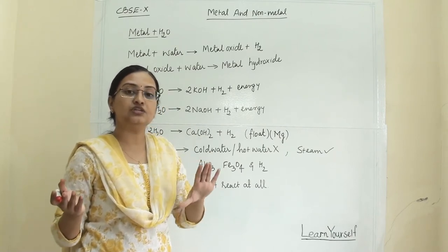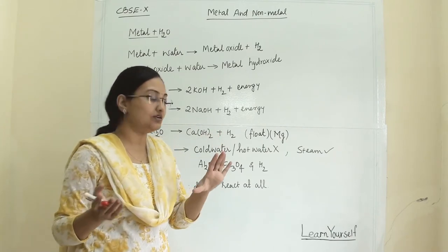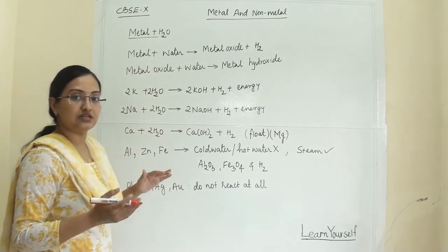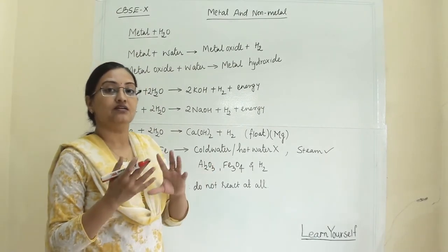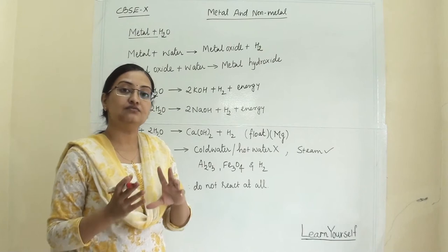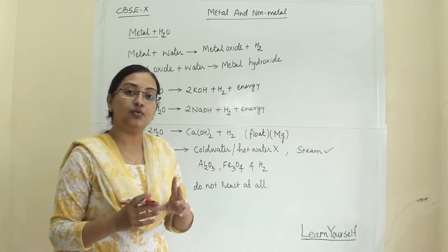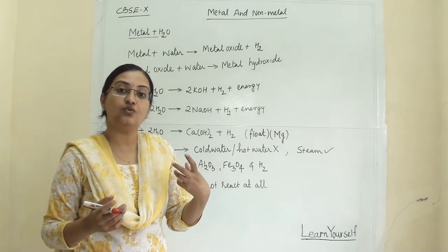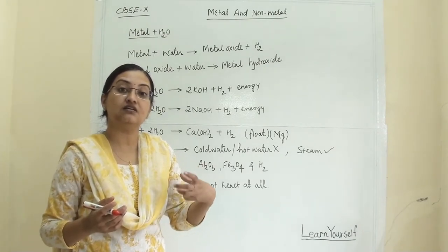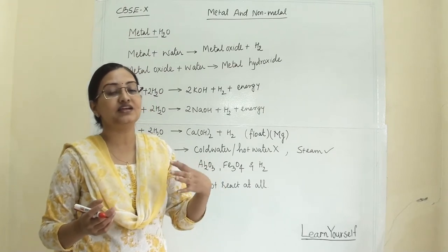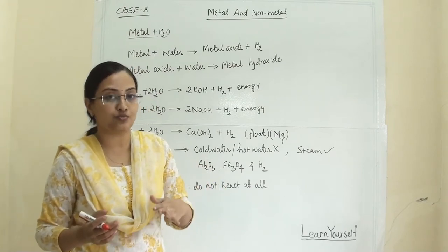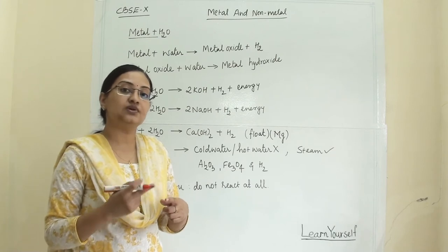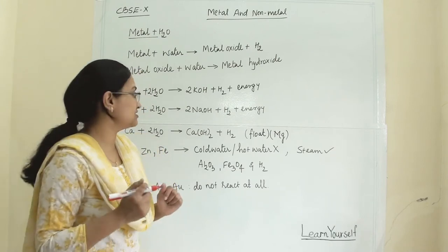In between, metals like magnesium, aluminium, and zinc have reactivity that depends upon how vigorously they react and how vigorously the other reactants react with those metals. So their behaviour will differ as per their reactivity.